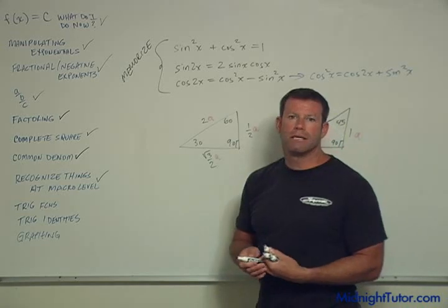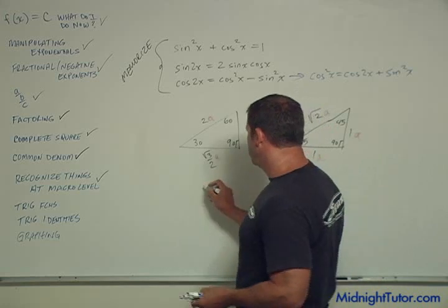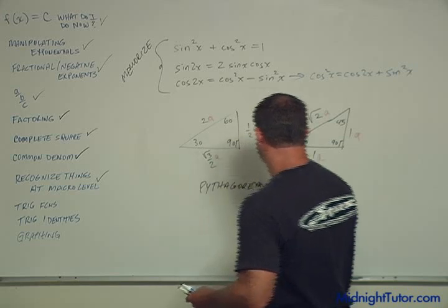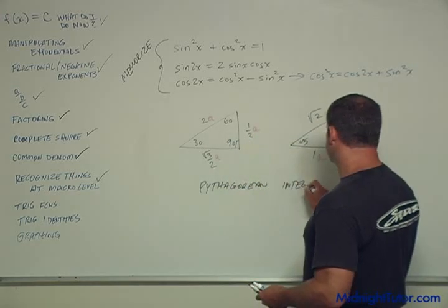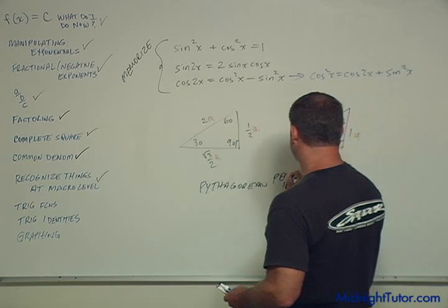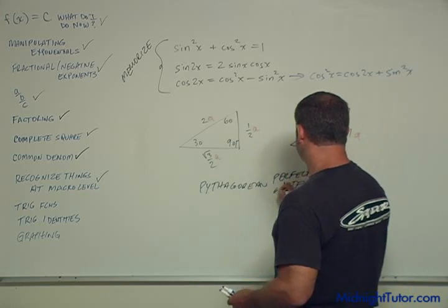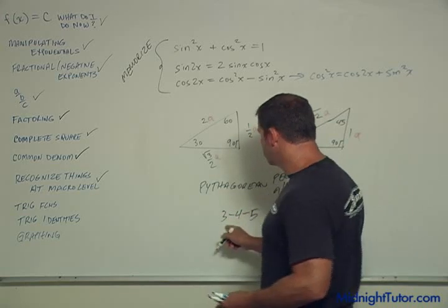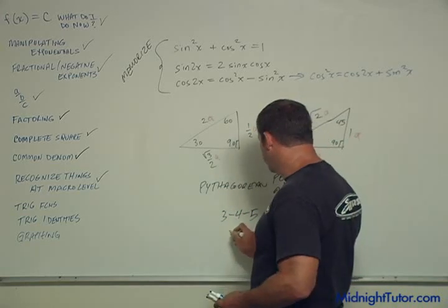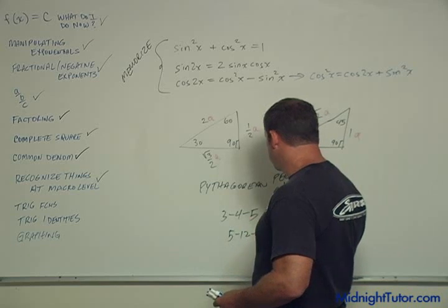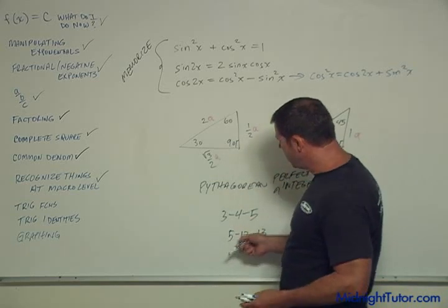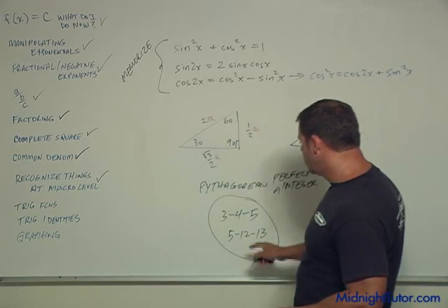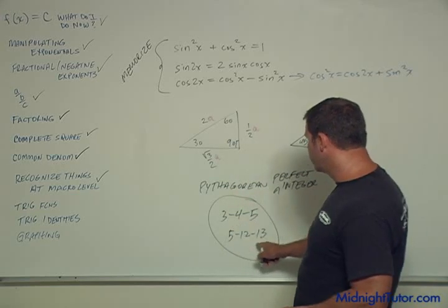While I'm on the topic, this is not exactly true but it's related, the Pythagorean integer, right, perfect integer. So we all know about the 3, 4, 5, right? But there's also the 5, 12, 13 and then there's one that's even higher than this which I forgot which you'll rarely encounter but these two you absolutely have to know. A lot of people who only know 3, 4, 5, they forget the 5, 12, 13.